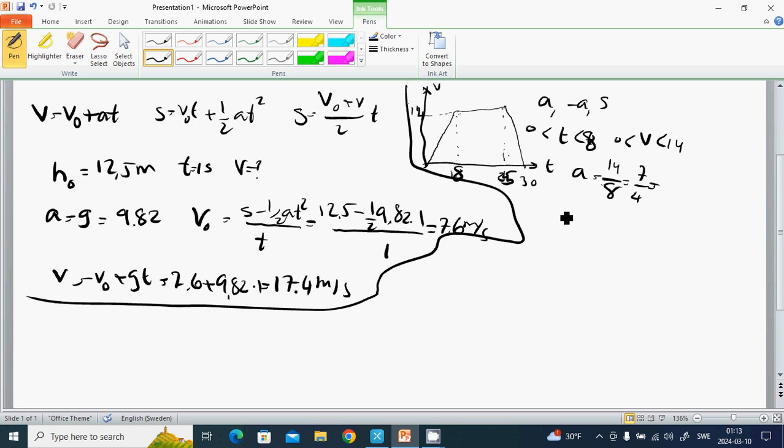Between T equals 25 to 30, V is between 14 and 0. Then a equals minus 14 divided by 5. 30 minus 25 is 5, so it's minus 2.8 meters per second squared.